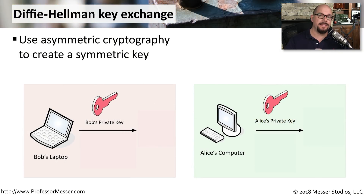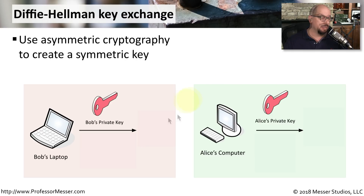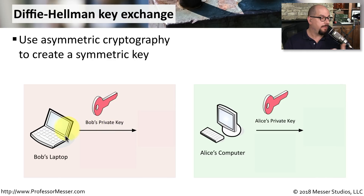Here's how Diffie-Hellman key exchange uses asymmetric cryptography to create a symmetric key. We know with asymmetric cryptography that everyone will have a public key and a private key. The public key is something that anyone would be able to see, and the private key is one that is private only to ourselves. So Bob is going to have a private key that he keeps to himself, and Alice is going to have a private key that she keeps for herself. No one is going to have access to Bob's private key except for Bob, and no one will have access to Alice's private key except for Alice.